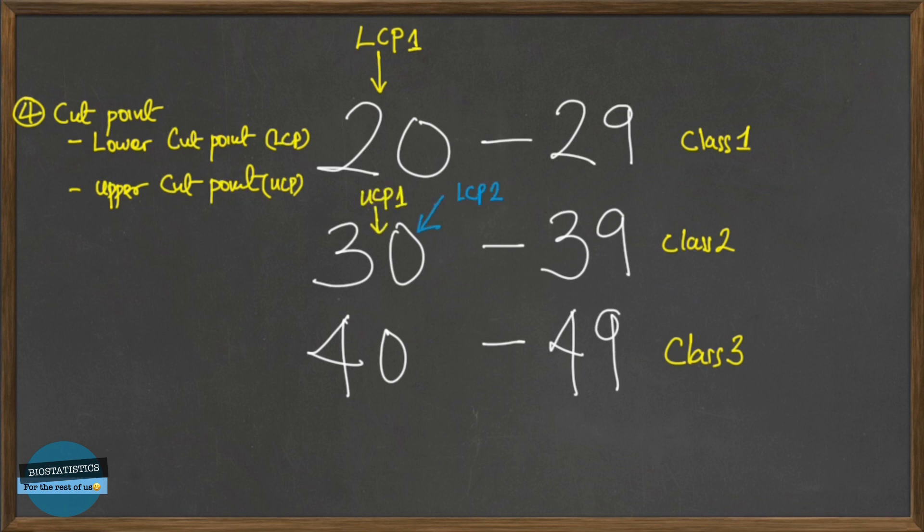And so let's look at class 2. The upper cut point for class 2 is 40, and it's the lower cut point for class 3. As a rule to remember, when you're talking about cut points, just limit it to this side of the group, which is the left vertical axis.